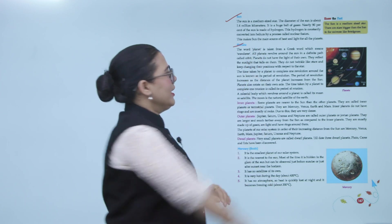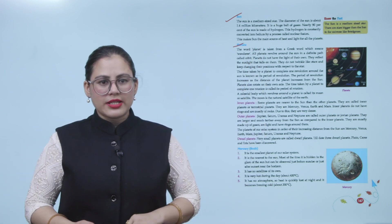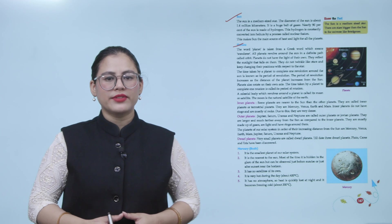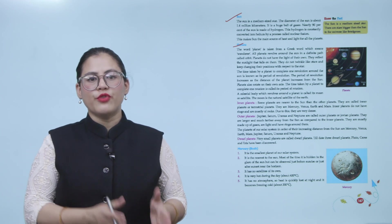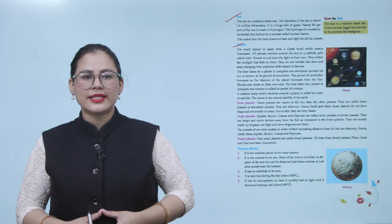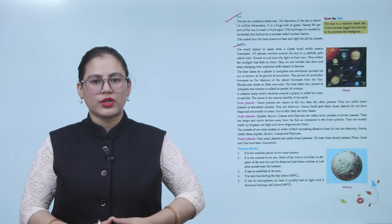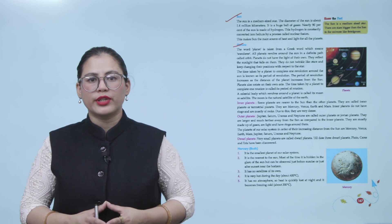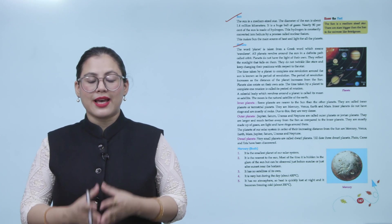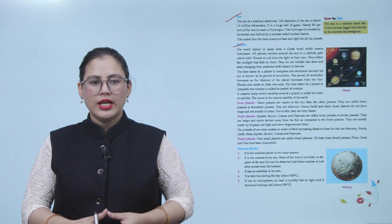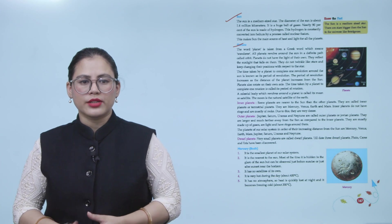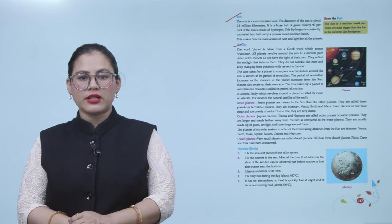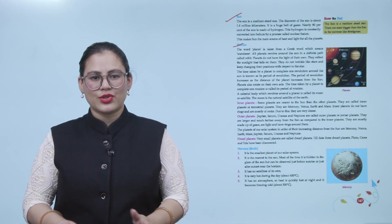Planets. The word planet is taken from a Greek word which means wanderer. All planets revolve around the sun in a definite path called orbit. Planets do not have light of their own. They reflect the sunlight that falls on them. They do not twinkle like stars and keep changing their positions with respect to the stars. The time taken by a planet to complete one revolution around the sun is known as its period of revolution. The period of revolution increases as the distance of the planet increases from the sun. Planets also rotate on their own axis. The time taken by a planet to complete one rotation is called its period of rotation. A celestial body which revolves around a planet is called its moon or satellite. The moon is the natural satellite of the earth.